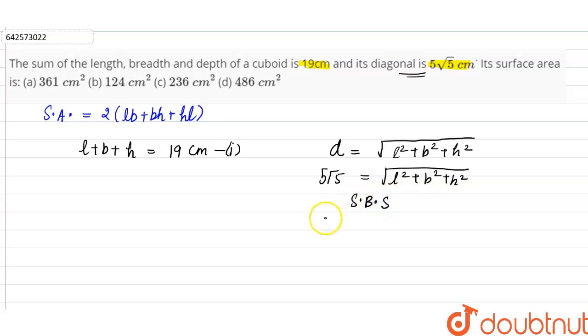Now if we square both the sides, 5 into 5, 25 into 5, 125. So 125 will be equal to L square plus B square plus H square. So let's say this is equation one and let's say this is equation two.